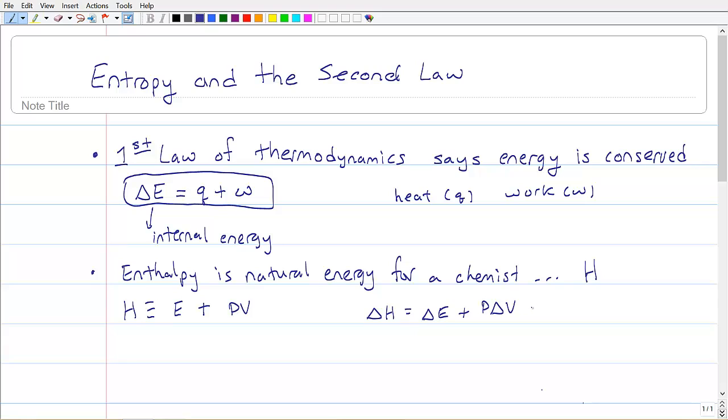We could also add in this other term, V times delta P. Well, here's the thing. Enthalpy is the proper choice for us to use as an energy because we're going to do most of our processes at constant pressure. So if we do a constant pressure, that means that delta P is equal to zero, and this term goes away.